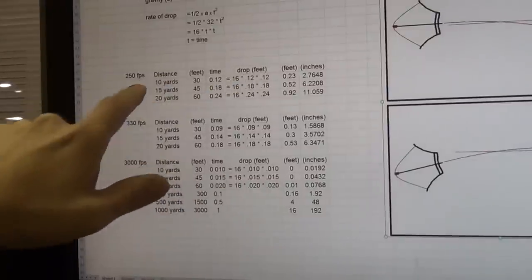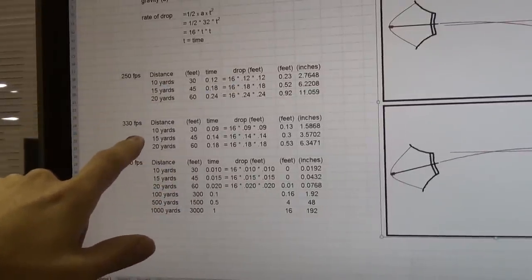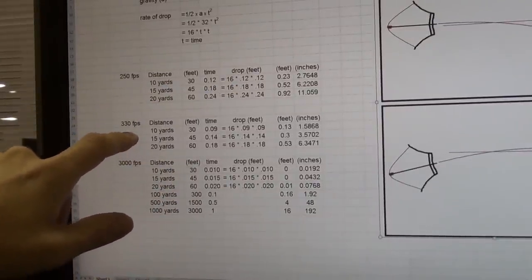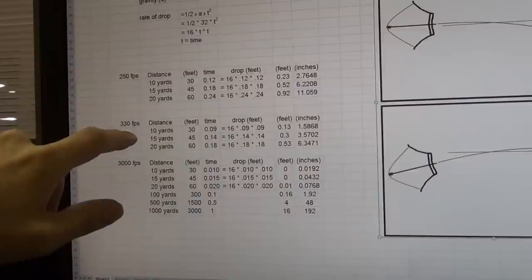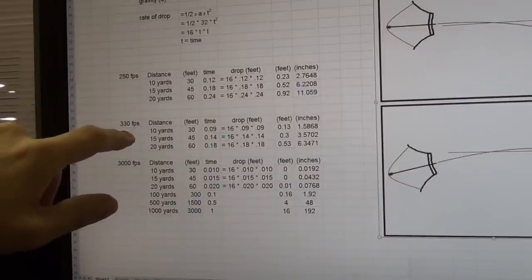Well, okay, here's 250 feet per second. Here's the same math done at 330 feet per second, which that's a pretty damn fast bow. So that's, my assassin will do it at 70 pounds and 30 inches draw.